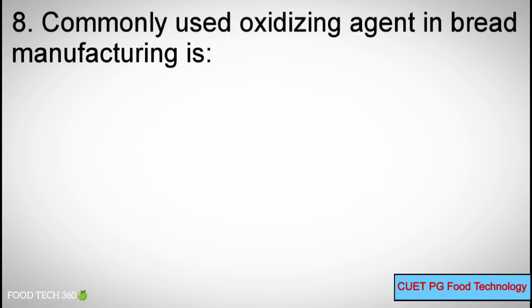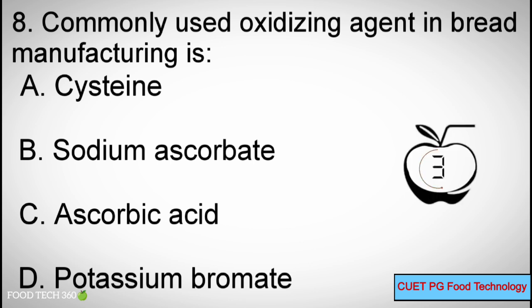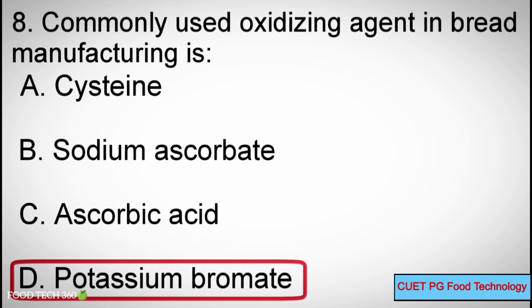Question number 8. Commonly used oxidizing agent in bread manufacturing is: Options A: Cysteine, B: Sodium ascorbate, C: Ascorbic acid, D: Potassium bromide. Correct answer: D, Potassium bromide.